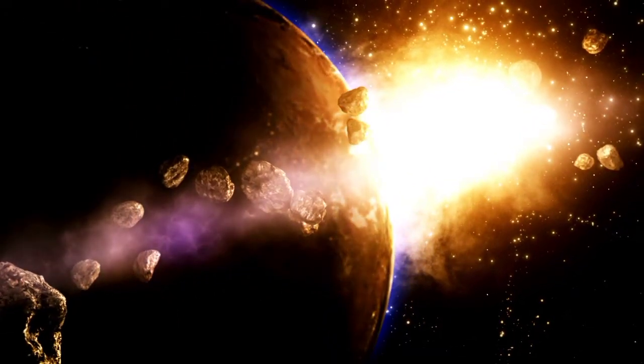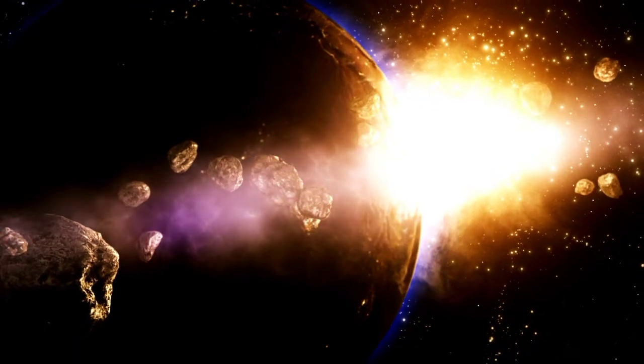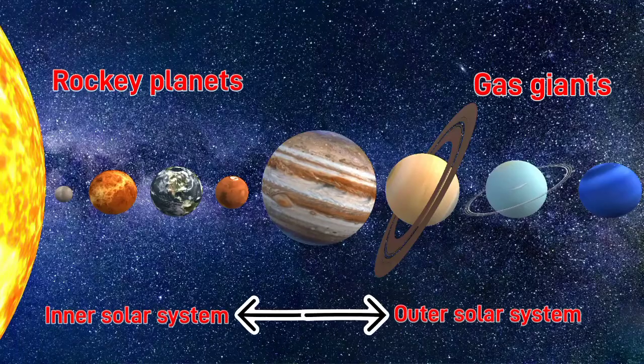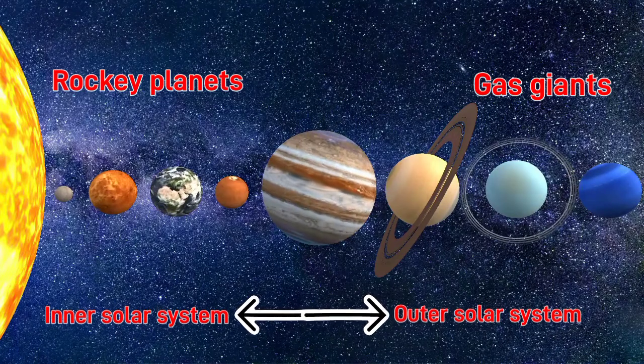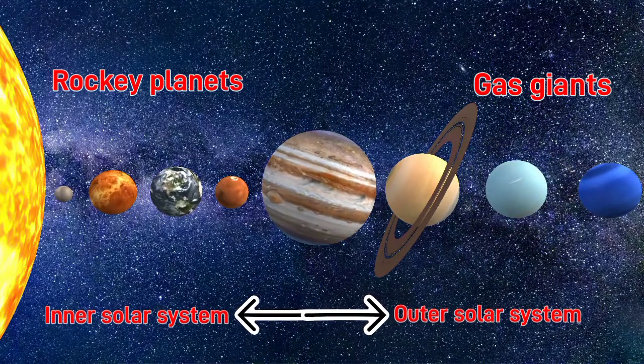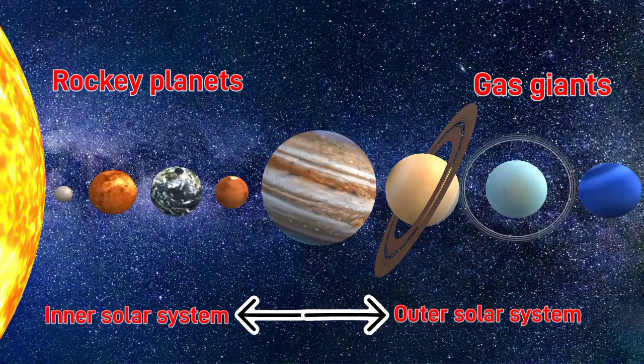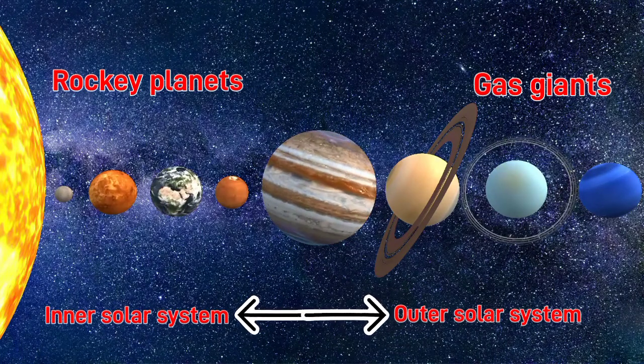It is unclear why only the gas giants have rings. However, the fact that gas giants formed in the outer solar system while rocky planets formed only in the inner solar system may be a clue.